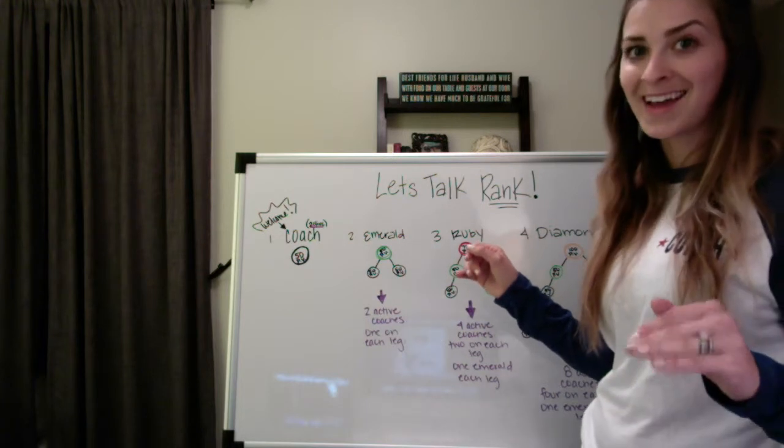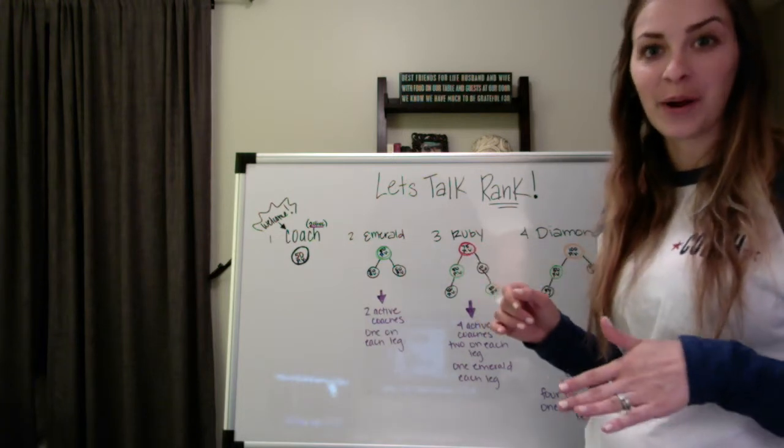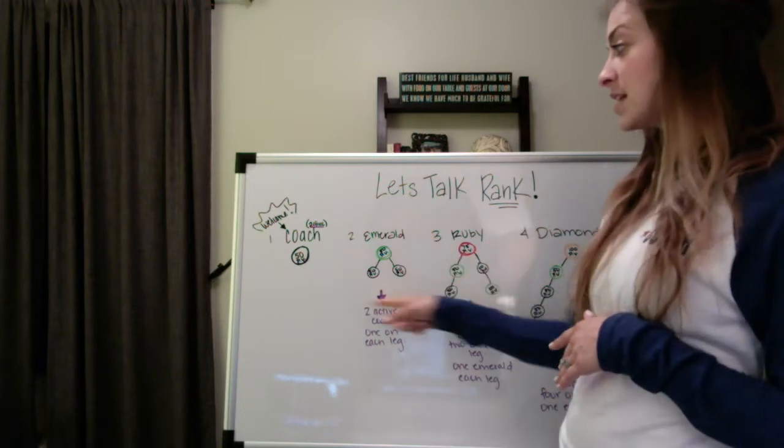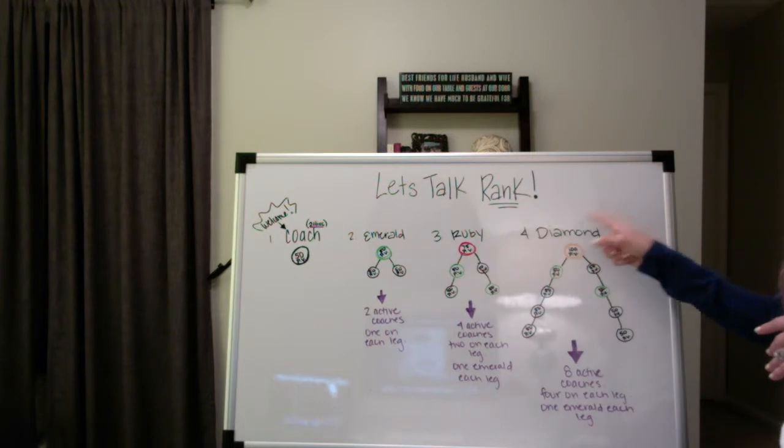So look into that, do your due diligence so that you are aware of exactly what the requirements are. But this is what a team looks like as an Emerald coach. This is what the team of a Ruby coach looks like. And this is what the team of a Diamond coach looks like.